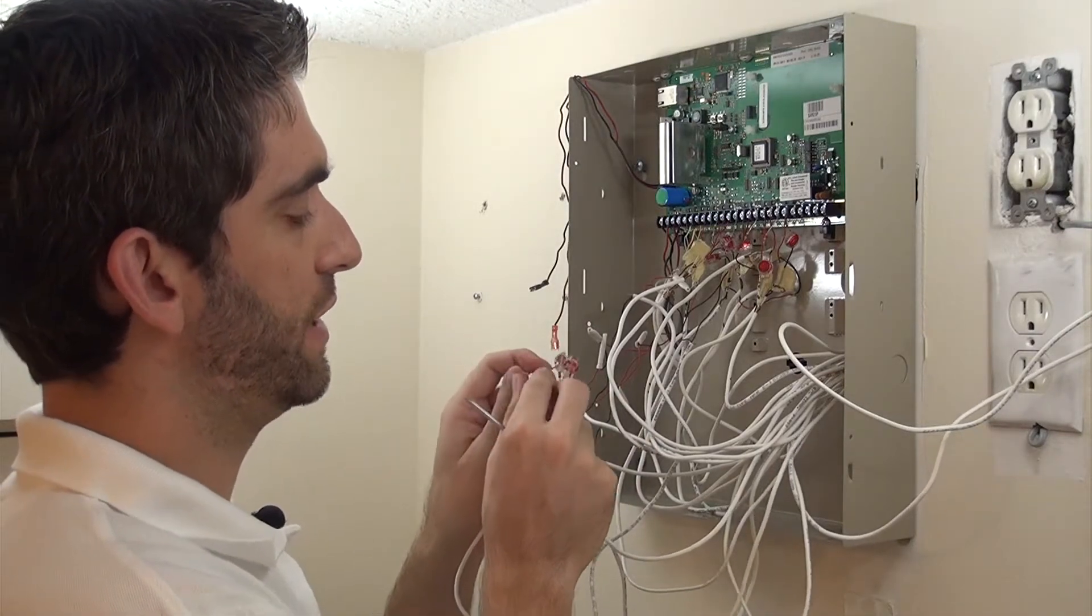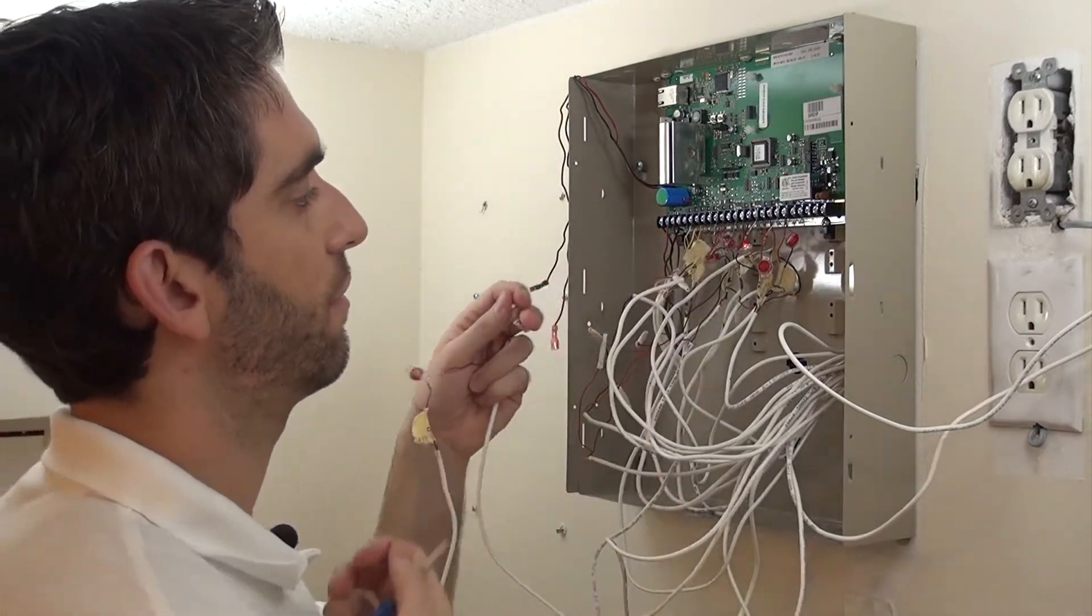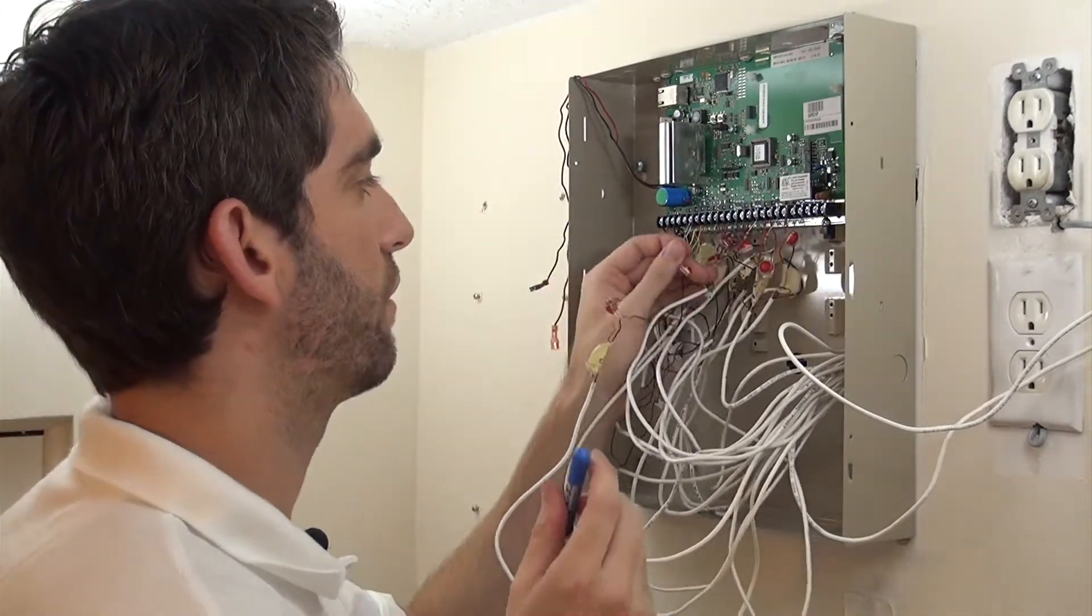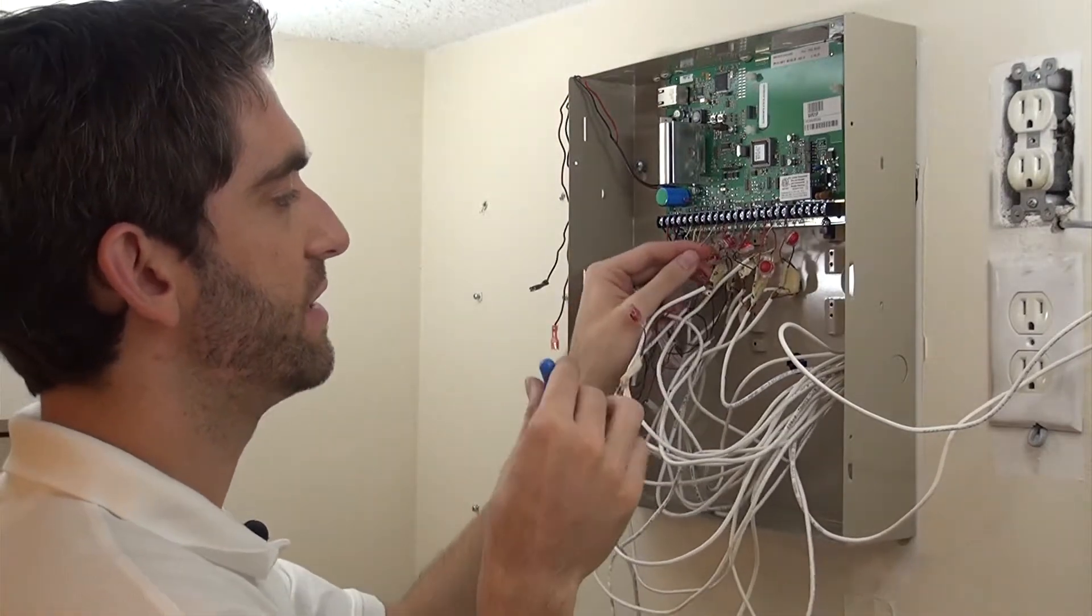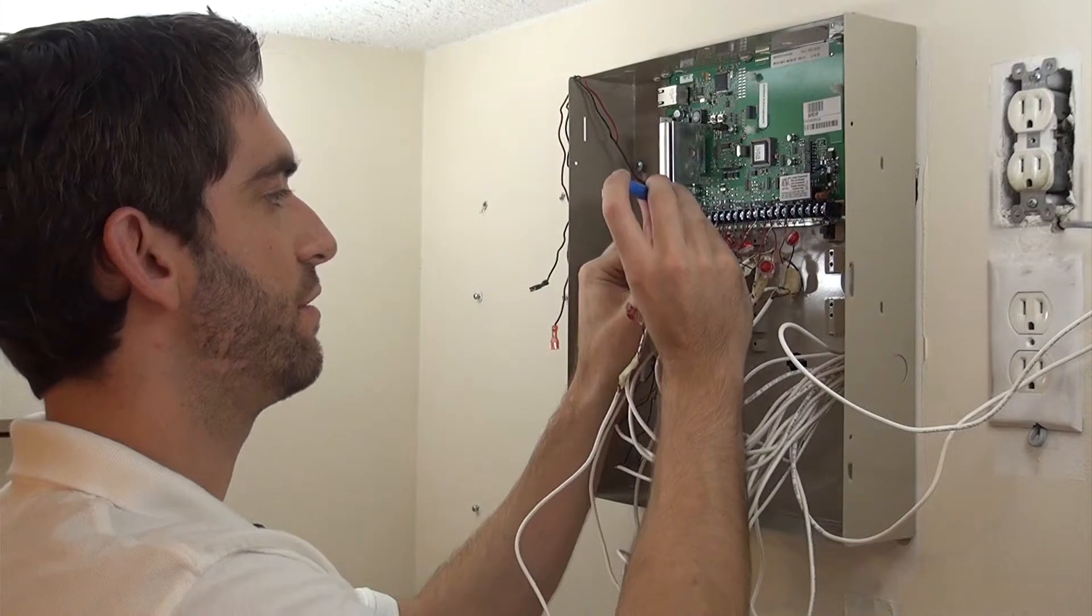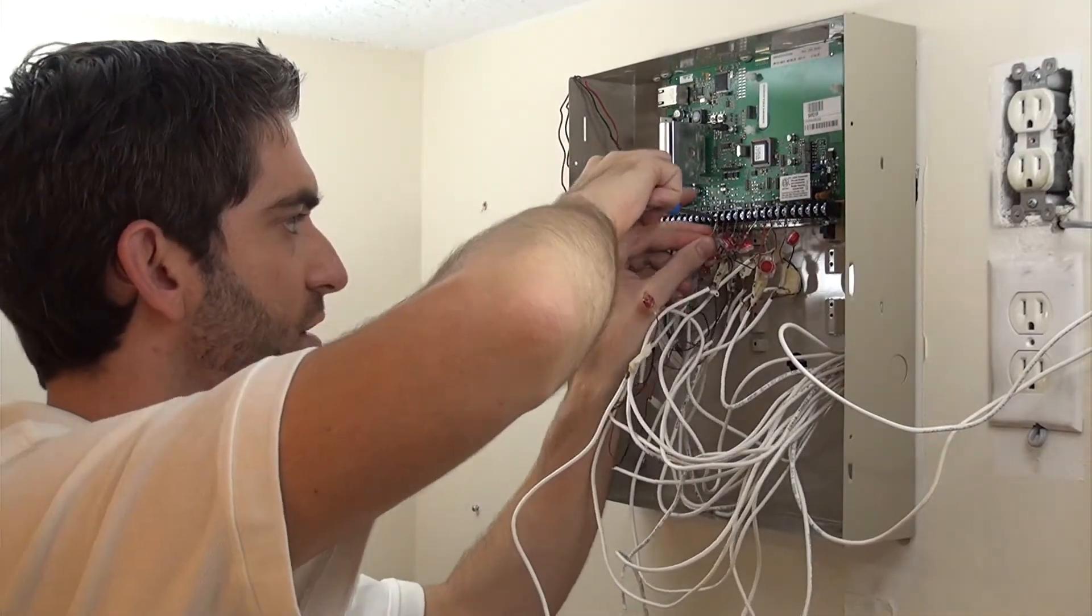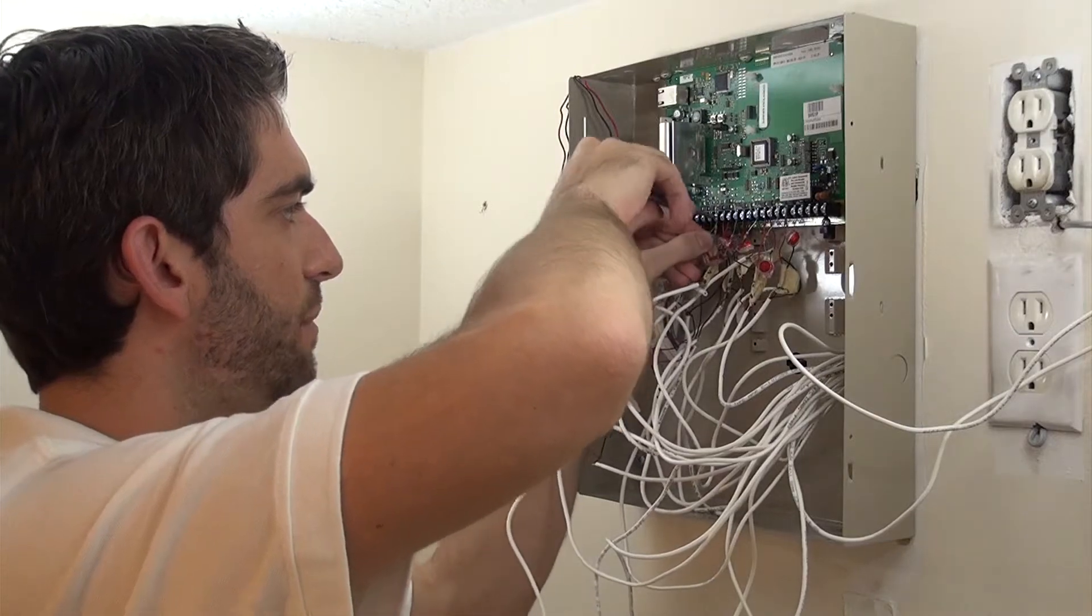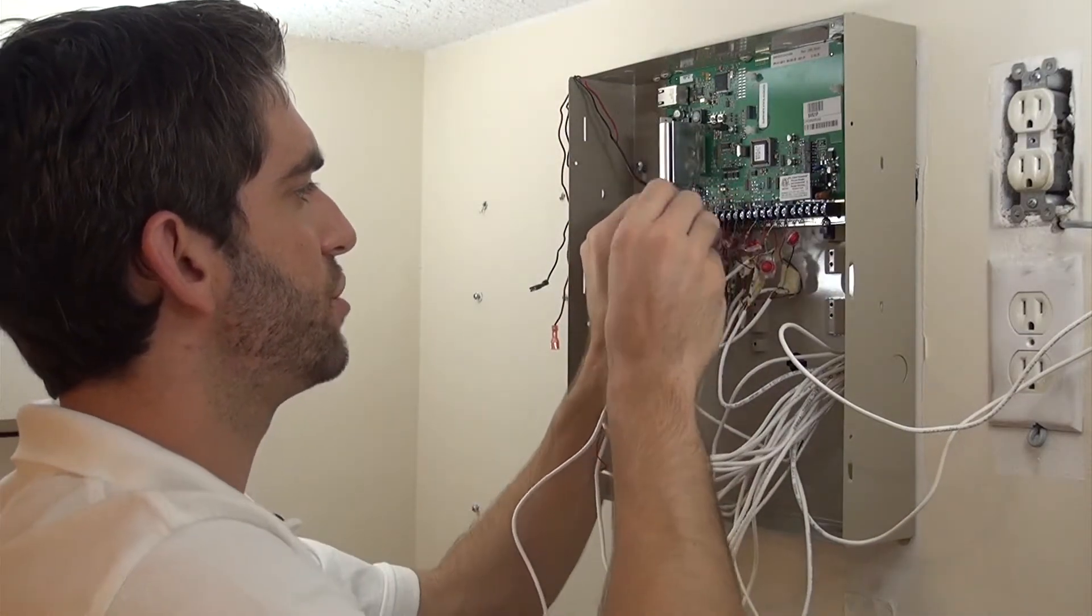So zone two is also going to be zone 10. And our zone two is already connected with our 3K resistor. So all we do is run our zones in parallel using the same existing zones. So our zone two was a ground and a Z2.